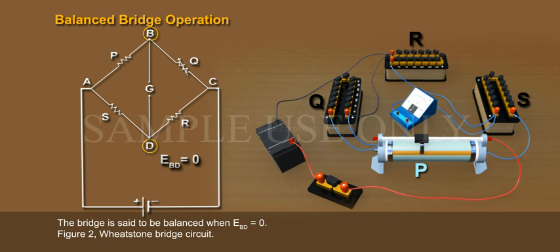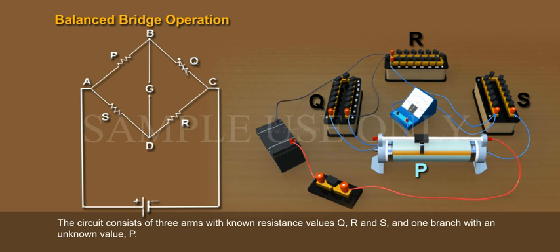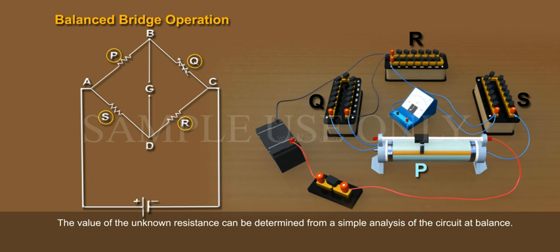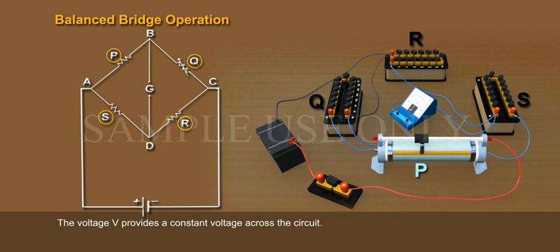Figure 2: Wheatstone Bridge Circuit. The circuit consists of three arms with known resistance values Q, R, and S, and one branch with an unknown value, P. The bridge is balanced when the detector reads 0 current. The value of the unknown resistance can be determined from a simple analysis of the circuit at balance. The voltage V provides a constant voltage across the circuit.